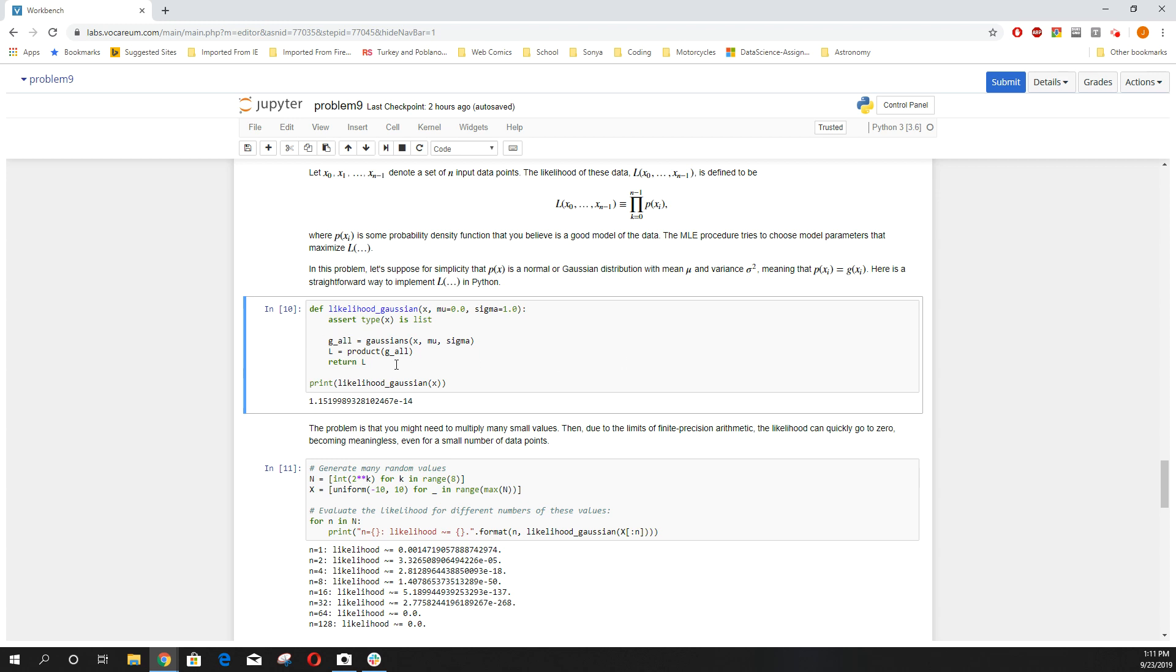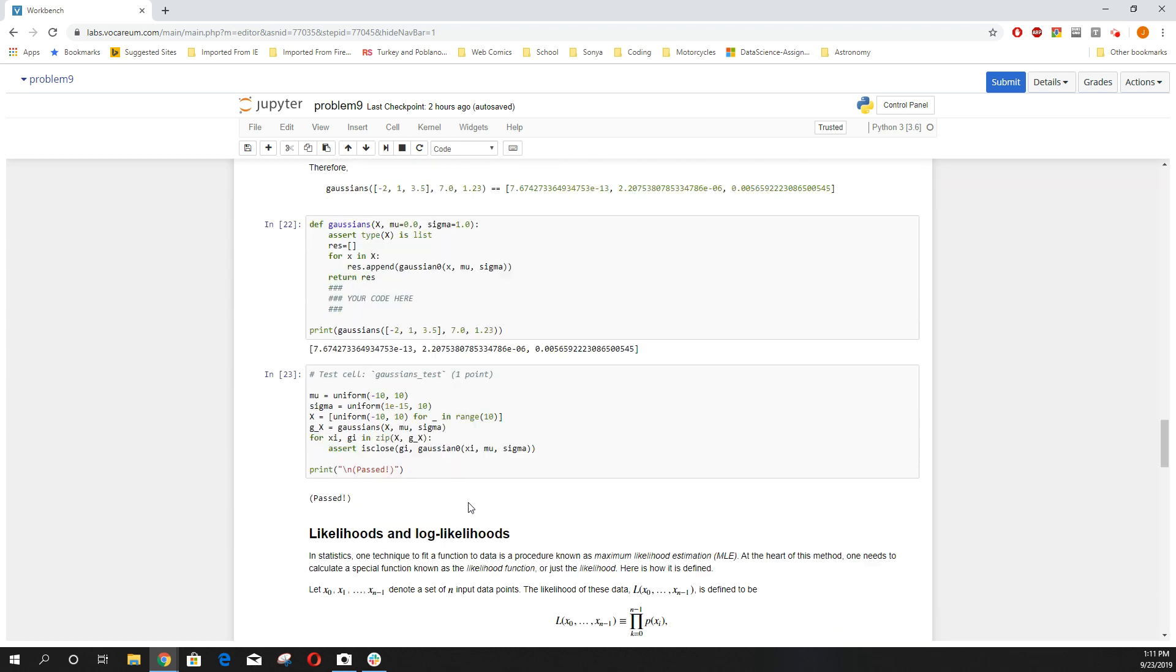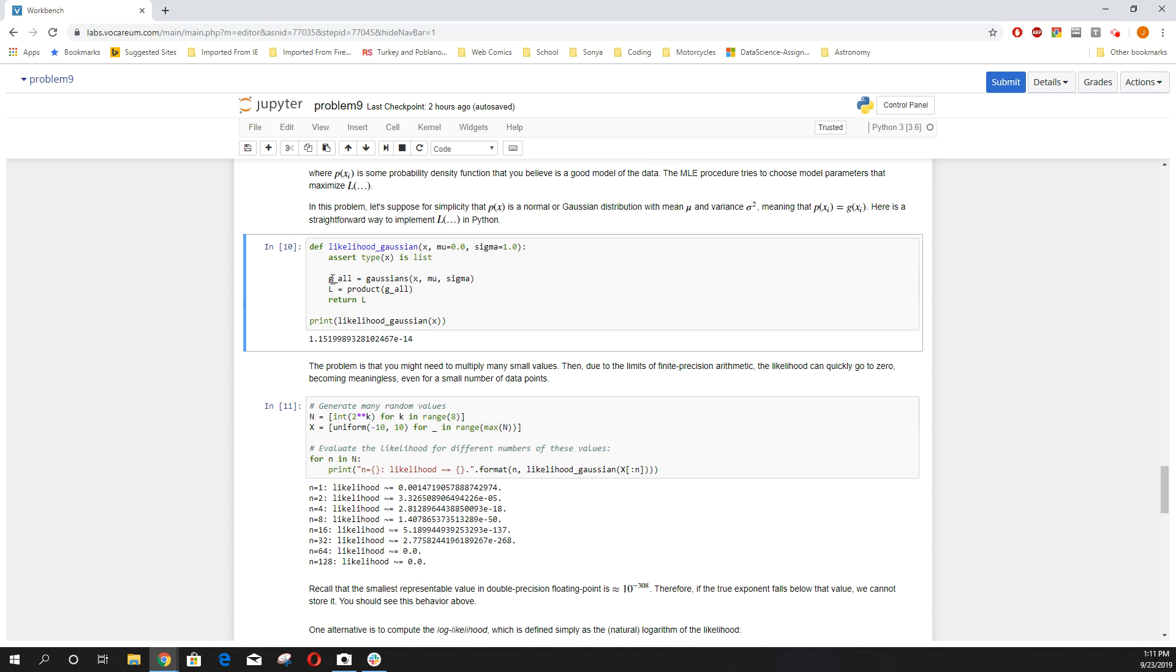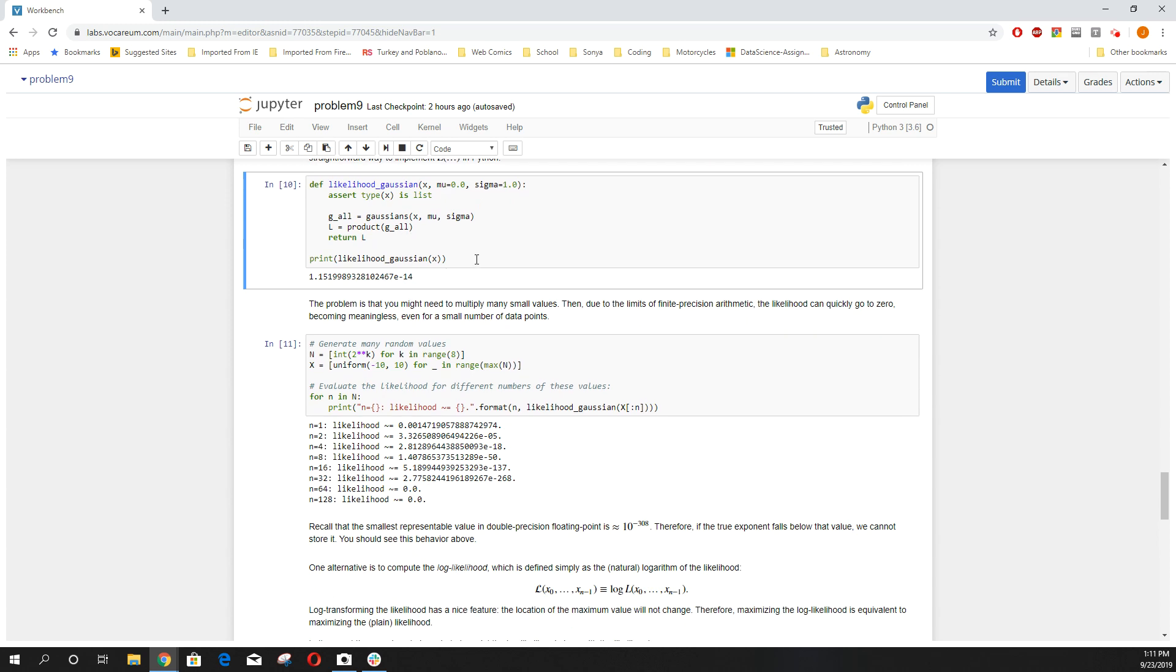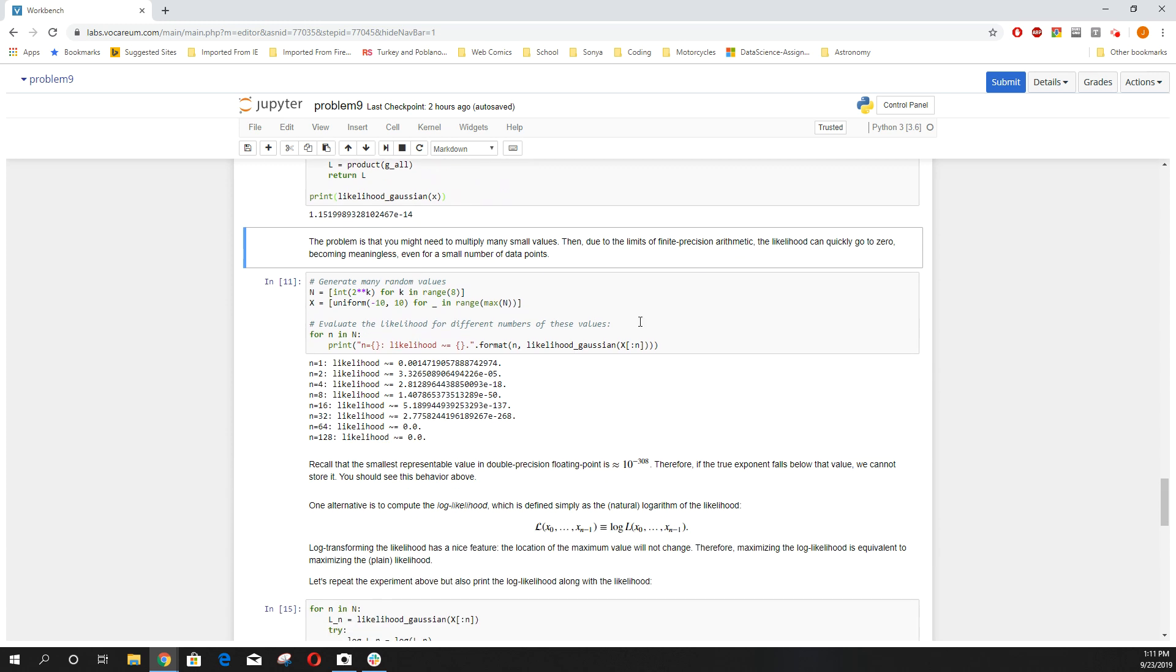G all is going to be a list because you're getting all the individual values of x running through Gaussians. And we know Gaussians returns a list. So G all is a list of individual Gaussian values. L is going to be the product of G all. Our little list x isn't that long. We multiply all those decimals times each other. We get 1.15 times 10 to the negative 14th. So pretty small decimal. And that's fine. But remember, each of those values were decimals. And we multiply a bunch of decimals times each other. The number gets smaller and smaller and smaller. Eventually we're going to 0 because the float can only be so accurate.